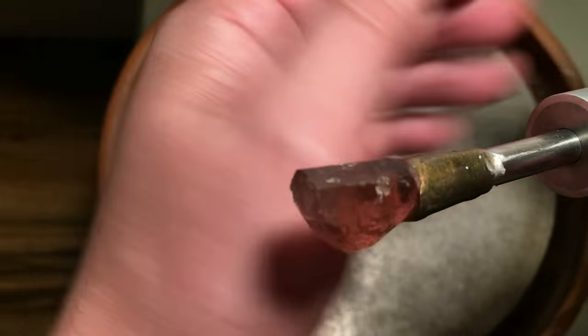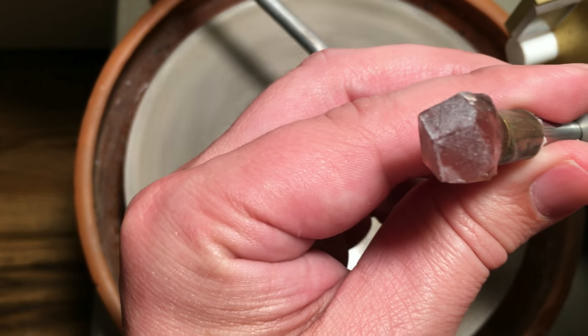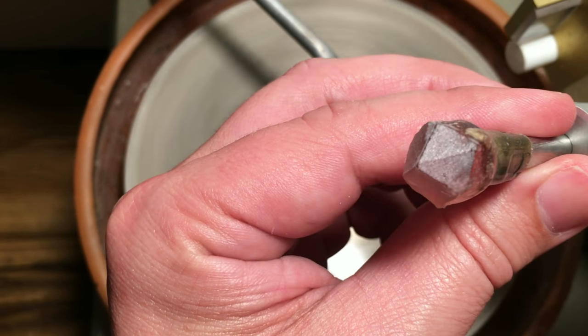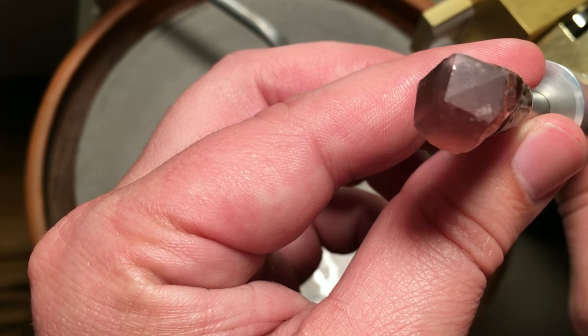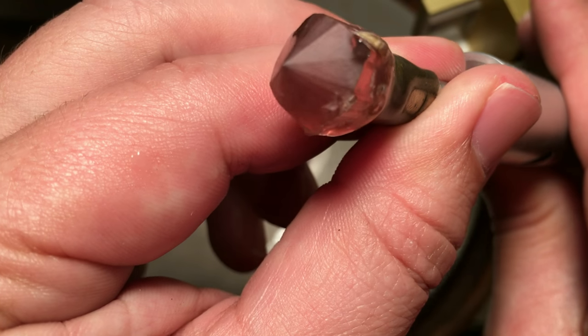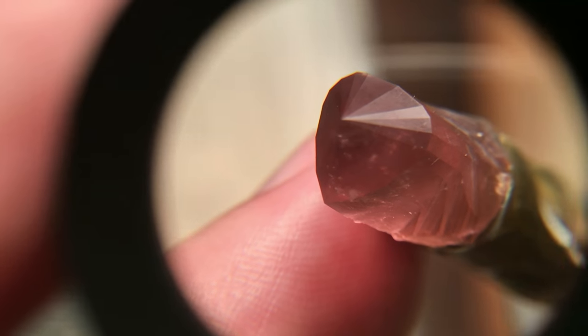I've roughed in the first six facets with the 100 grit lap, which is the first and only time I'm going to use that lap in this project. Here are the same six facets recut with the 600 grit, and I finally cut in all the facets with the 1200 grit.